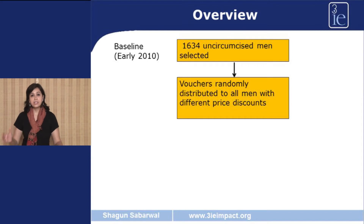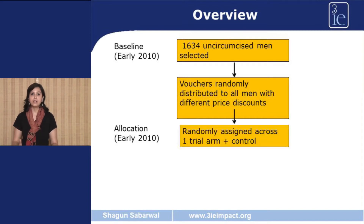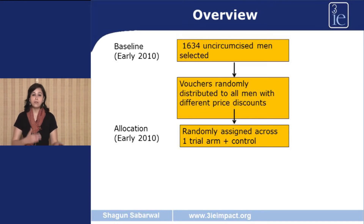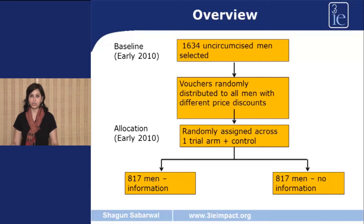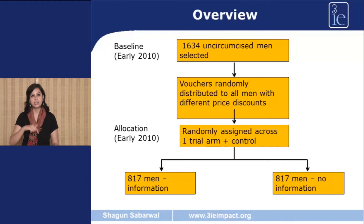Then, of all 1,634 men, half were divided into the treatment arm and half into the control arm. Half of these men actually got an information intervention in which they were given comprehensive information about the relationship between HIV and male circumcision, and how this procedure is actually done. The other group did not get any information. So this was essentially the design of the study. One year after this, the investigators once again conducted a follow-up survey, in which the same individuals were asked questions on pretty much the same indicators one year later.